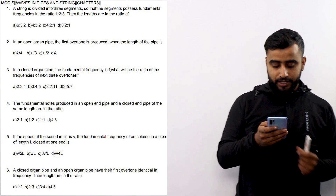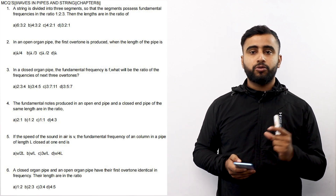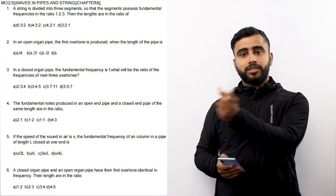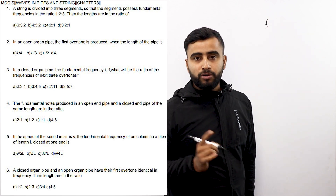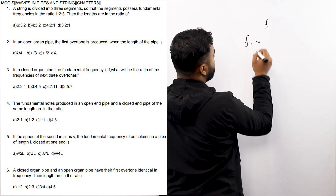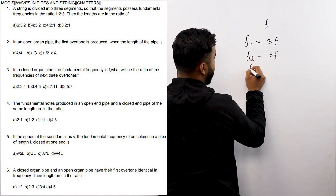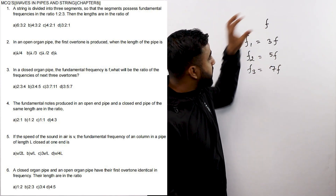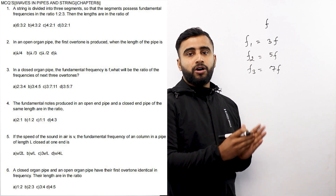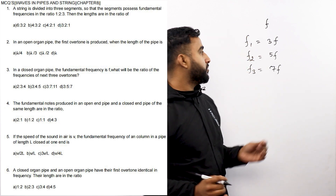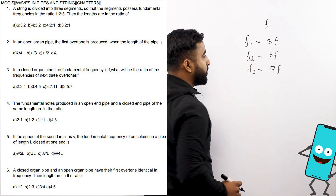Question number 3: In a closed organ pipe, the fundamental frequency is f. What will be the ratio of frequencies of the next three overtones? In a closed organ pipe, the first overtone is 3f, the second overtone is 5f, and the third overtone is 7f. In a closed organ pipe, overtones are odd multiples of the fundamental frequency.